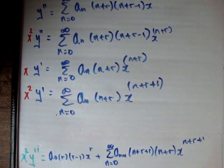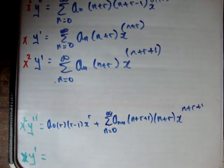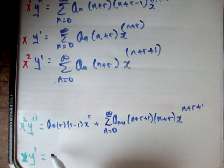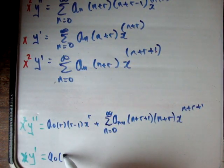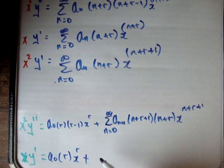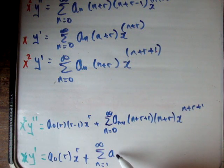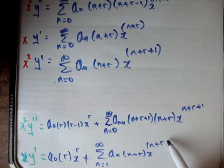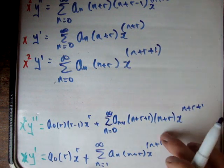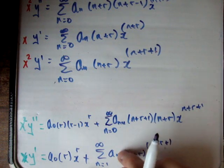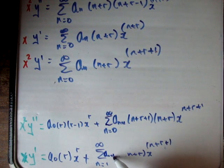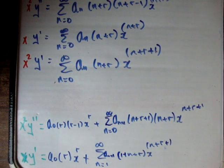Let's do the exact same thing with xy prime. The first term is going to be a₀ times r times x to the r, plus the sum from n equal to 1 to infinity of aₙ times (n plus r) times x to the n plus r. This is essentially the same equation as before, so this becomes n plus r plus 1, and we get aₙ₊₁ times (1 plus n plus r) times x to the n plus r plus 1.